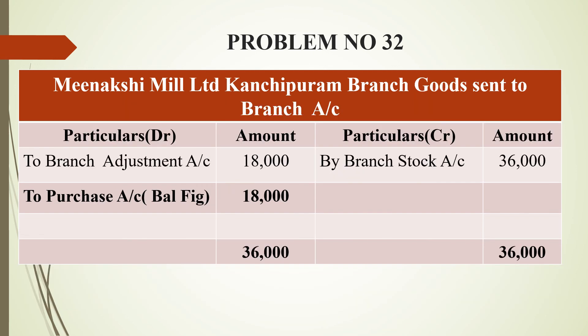Next is the goods sent to branch account. By branch stock account is Rs. 36,000. The profit value — Rs. 18,000 — goes to branch adjustment account, and we get the branch stock account at invoice price. After totalling, the balancing figure is Rs. 18,000 to purchase account (or trading account for a manufacturing concern). Grand total is Rs. 36,000.